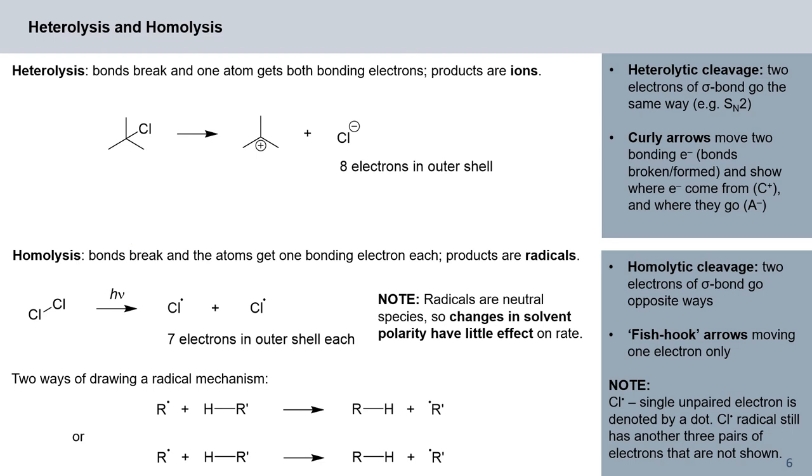So here in this case we have heterolytic cleavage of a carbon-chlorine bond and we represent this via curly arrows. We know curly arrows move two bonding electrons. So they also indicate where the electrons come from. In this case they come from here our carbon plus here on the right hand side and where the electrons go. They go here towards an anion, in this case our leaving group, and here in this case it's our chloride which we are forming. So as you can see, we have now formed two ions in this heterolytic cleavage and our chloride has eight electrons in the outer shell.